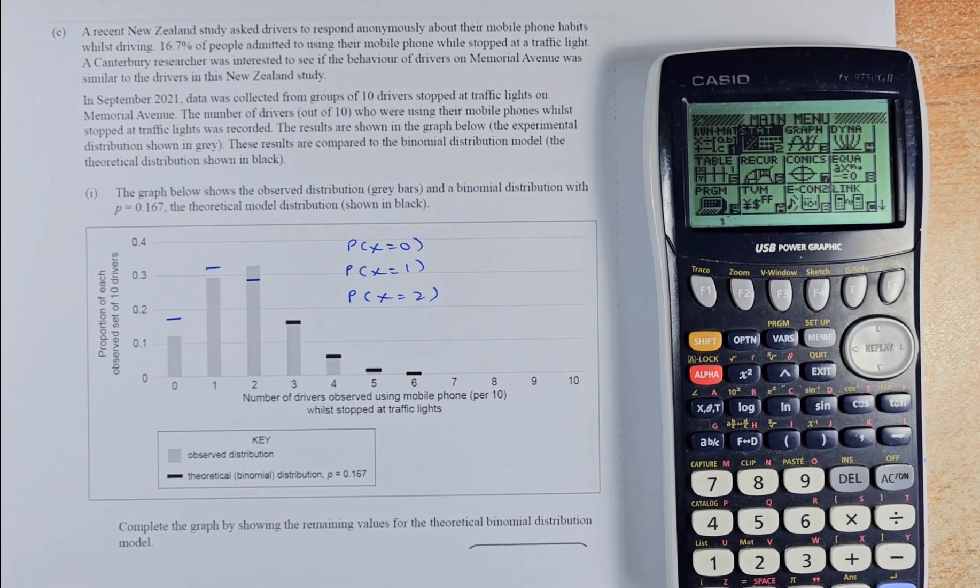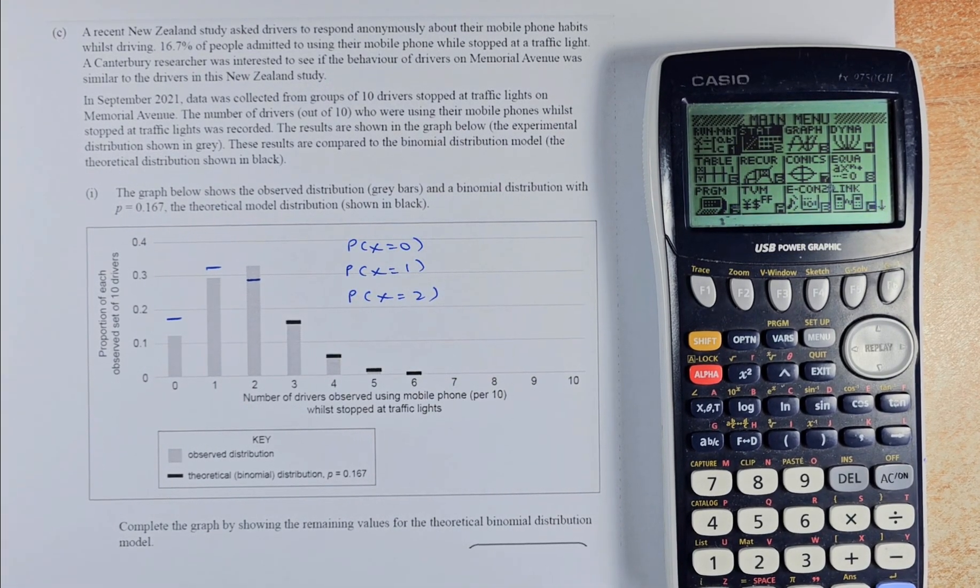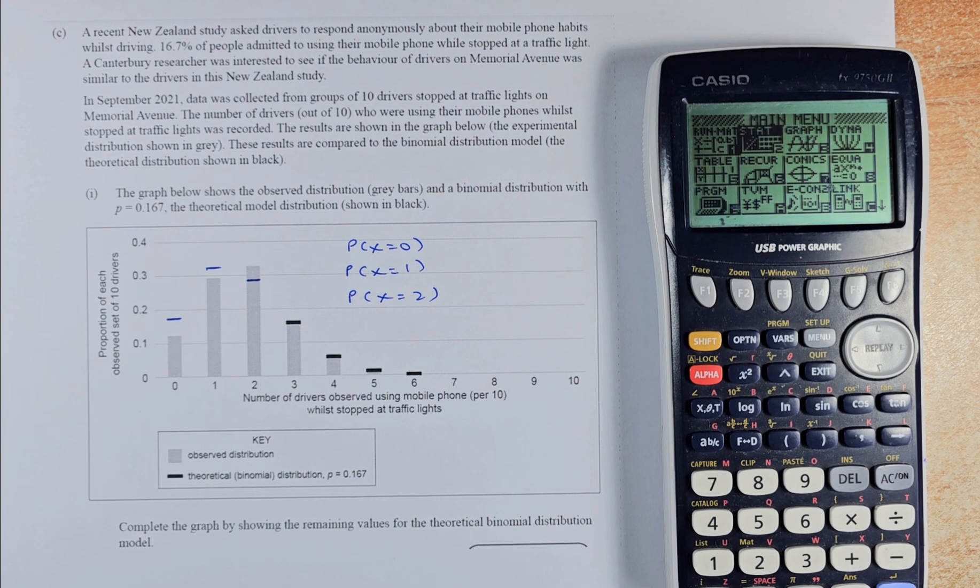Good day! In this video, we are going to try and solve question 1c of the 2021 NCA Level 3 Statistics paper probability distribution. There are two parts to this question. We will do both of them in this video. So we shall read question 1c part 1 first.